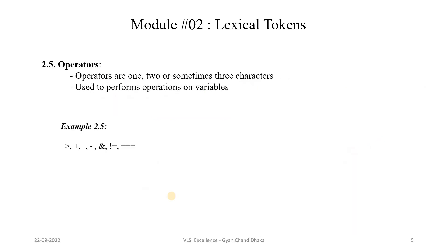The fifth kind of token a Verilog HDL file can have is operator. Operators can be one-character, two-character, or sometimes three-character operators, and they are used to perform operations on variables. Examples could be greater than, plus, minus, negate, AND operator, not-equal-to, or triple-equal. Our Verilog text file can have any kind of operator.